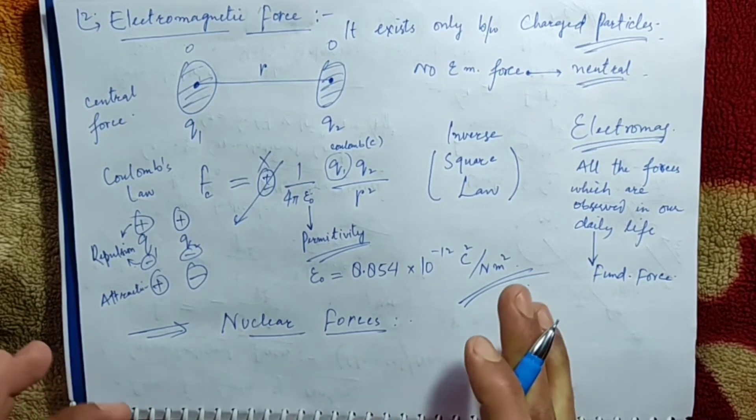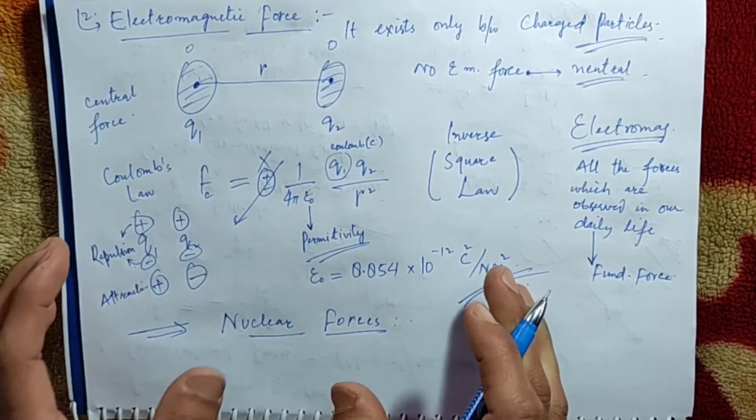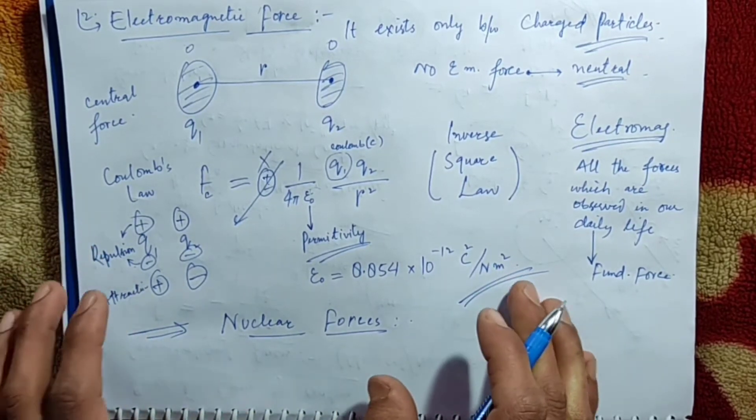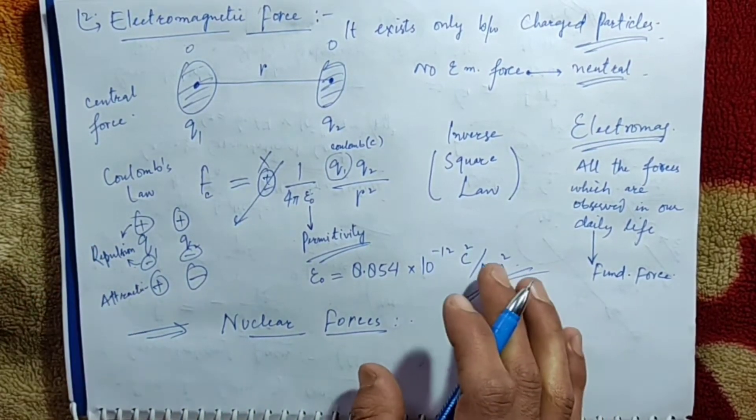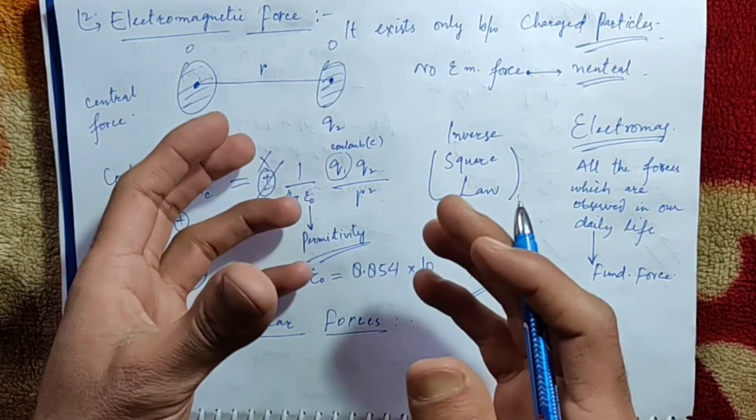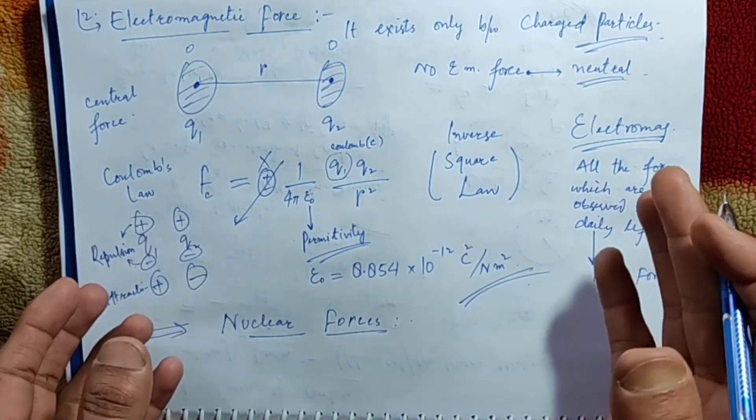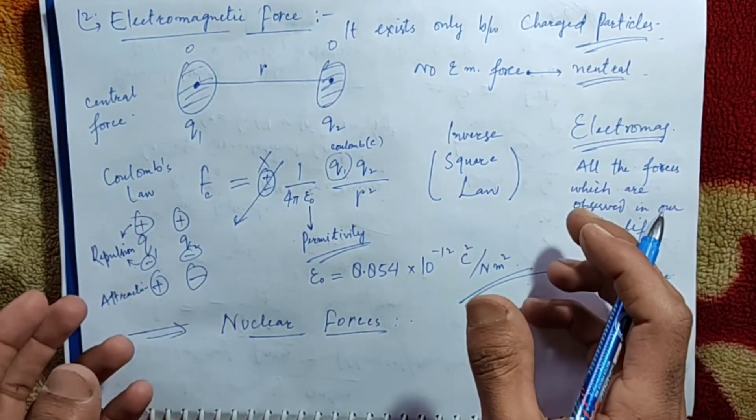There are two nuclear forces — they are of two kinds. One is the strong nuclear force and the other is the weak nuclear force.